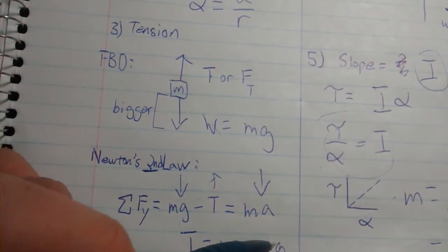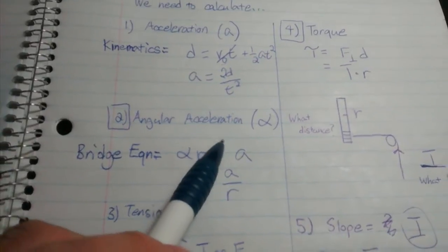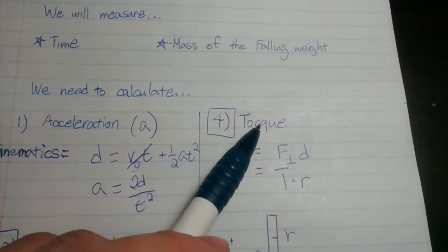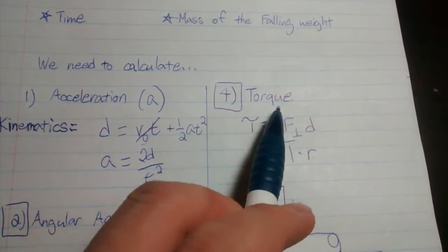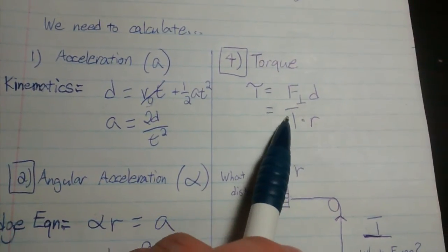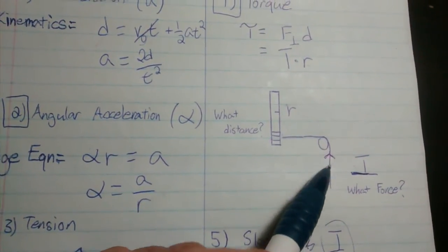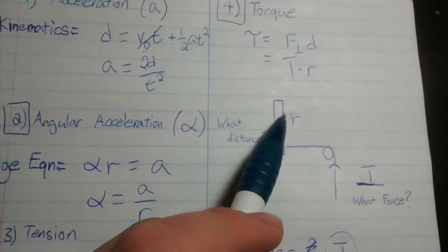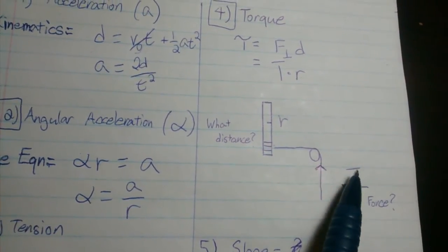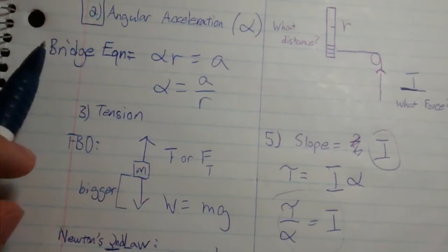Number four is torque. Torque equals force perpendicular times distance, which in this case is tension times radius, perpendicular to the radius. That's 0.009 meters in our case—it might be different for yours—and tension was previously calculated.